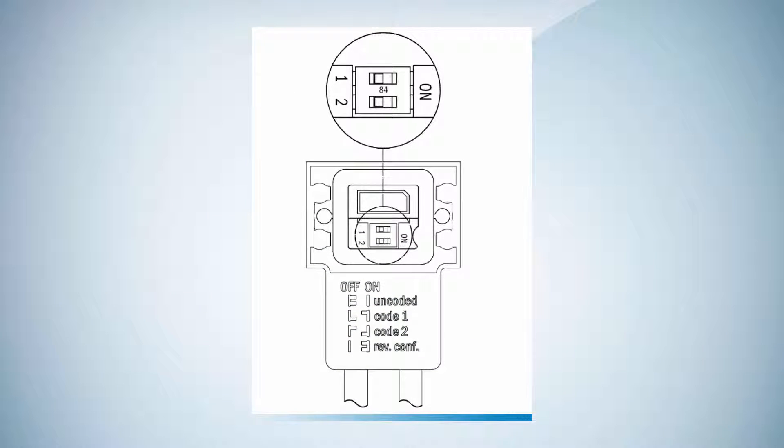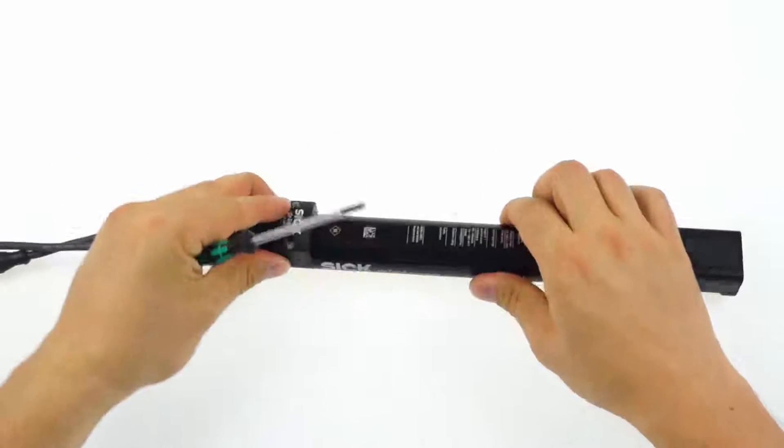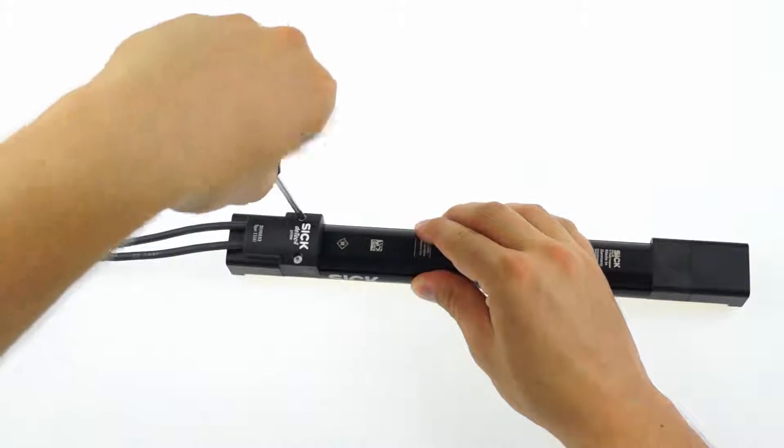The new deTec4 Prime incorporates a beam coding function to prevent the devices from being influenced by a second system. To configure beam coding, disconnect the device from the power supply.